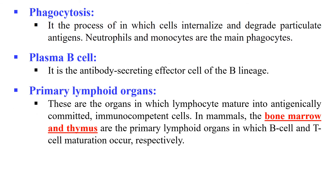Primary Lymphoid Organs are the organs where immune cells — B and T cells — mature. In mammals, bone marrow and thymus are the primary lymphoid organs. B cells mature in the bone marrow while T cells mature in the thymus.